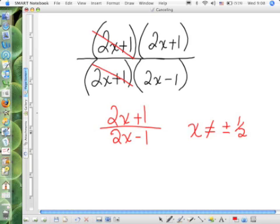So, the final answer here would be 2X plus 1 over 2X minus 1. You do not have to put the group back in parentheses, but you can if you want to. As long as X does not equal positive or negative 1 half. And this would be our final answer.